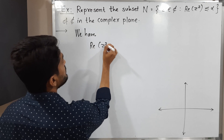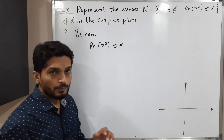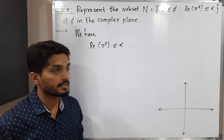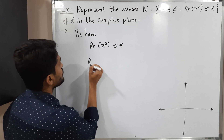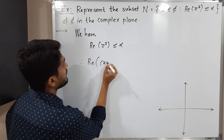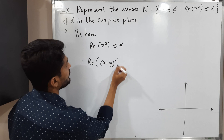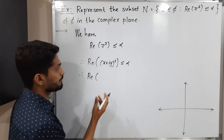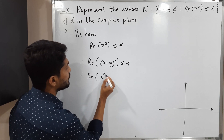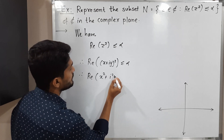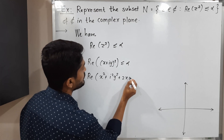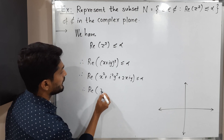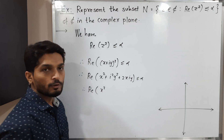We have the real part of z squared less than or equal to alpha. We replace z by its Cartesian form, that is x plus iy. So we compute the real part of (x + iy) squared, which we expand using the formula (a+b)² = a² + 2ab + b², giving x² + 2ixy + i²y², all less than or equal to alpha.